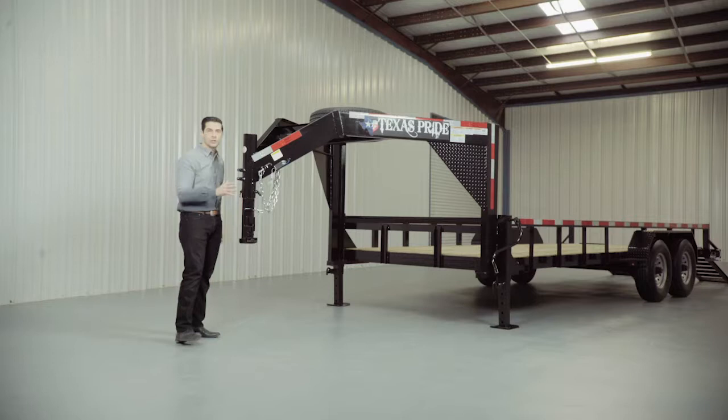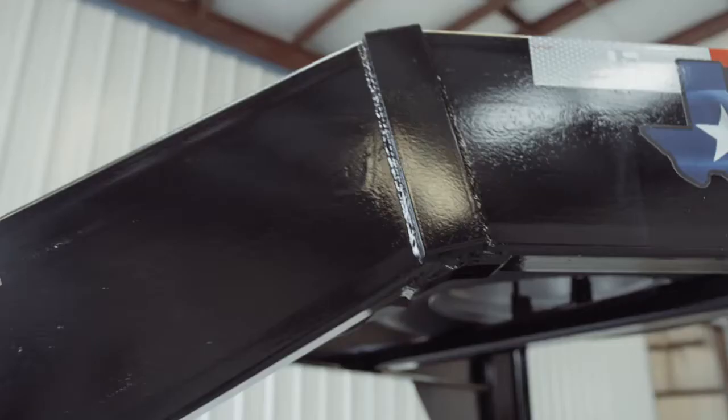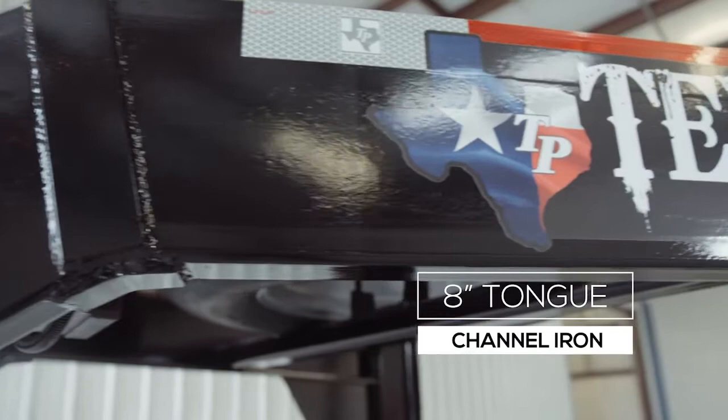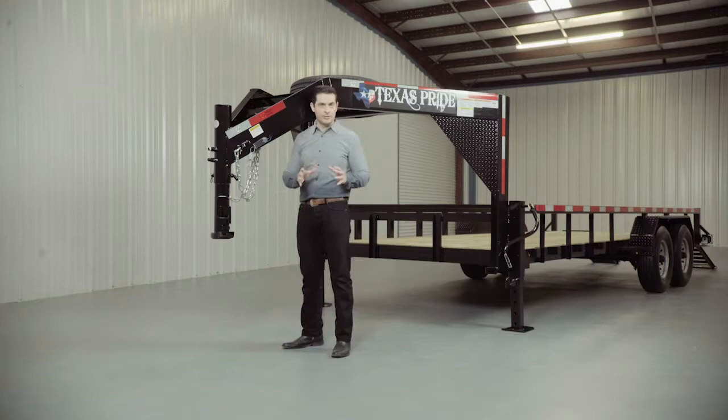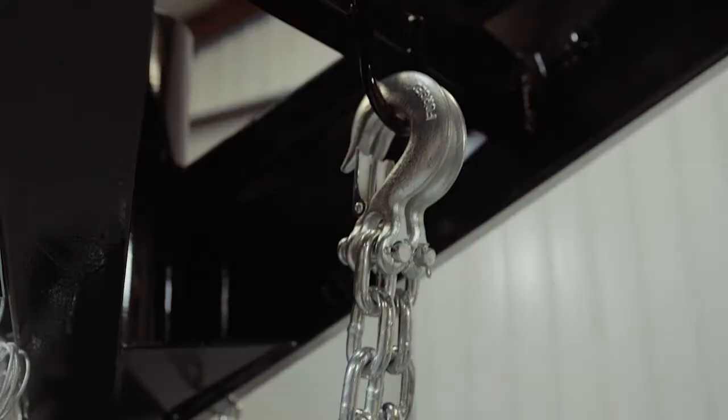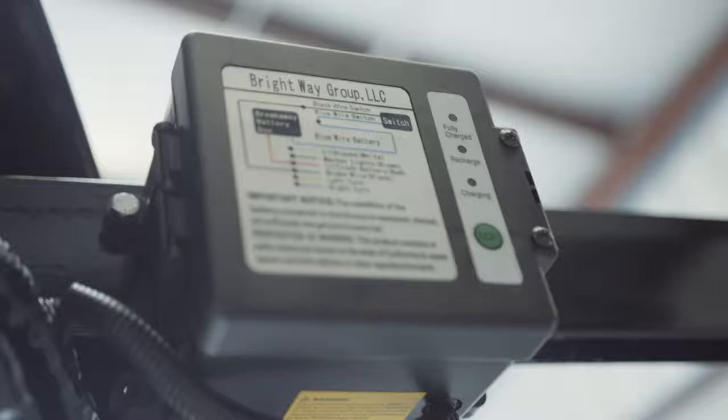Behind the coupler we have a heavy 8 inch channel iron tongue for maximum strength and stability. Every Texas Pride trailer features all required DOT heavy duty safety chains, breakaway switch with long lasting battery, and more reflective tape than you will find on most other trailers.